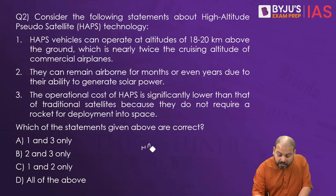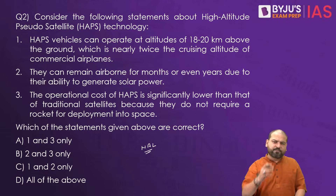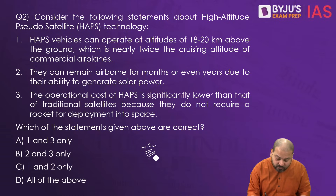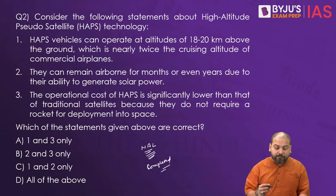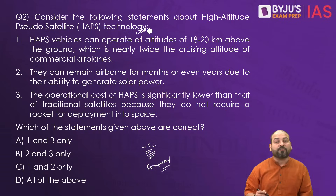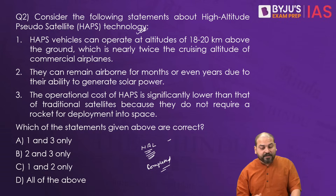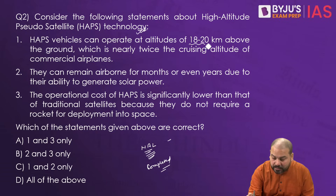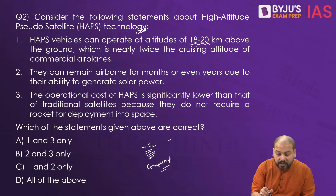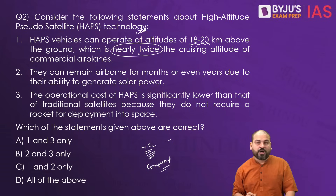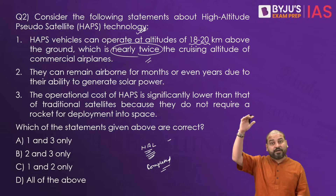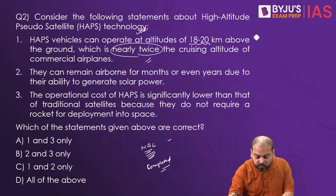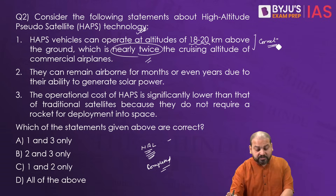Please understand — in the Indian Express, this article has come that the National Aerospace Laboratory in Bengaluru has successfully completed the first test of this solar-powered HAPS technology pseudo-satellite. As you can see here, the first statement says that this operates at an altitude of 18–20 km above the ground, which is nearly twice the cruising altitude. Many people might have got confused about whether they can operate at such a height — but absolutely correct, this is correct.